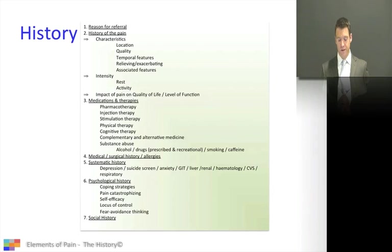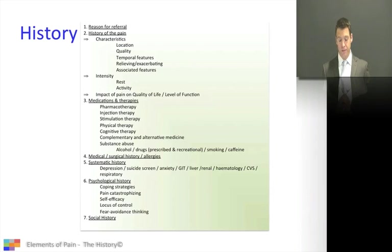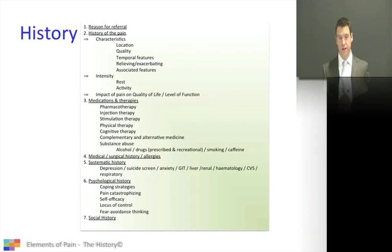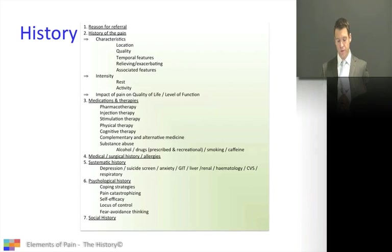Four and five: we need to take a medical history, surgical history, consider allergies, as well as taking a systemic history. And then six and seven consider the psychological aspects of this patient, as well as the social aspects.